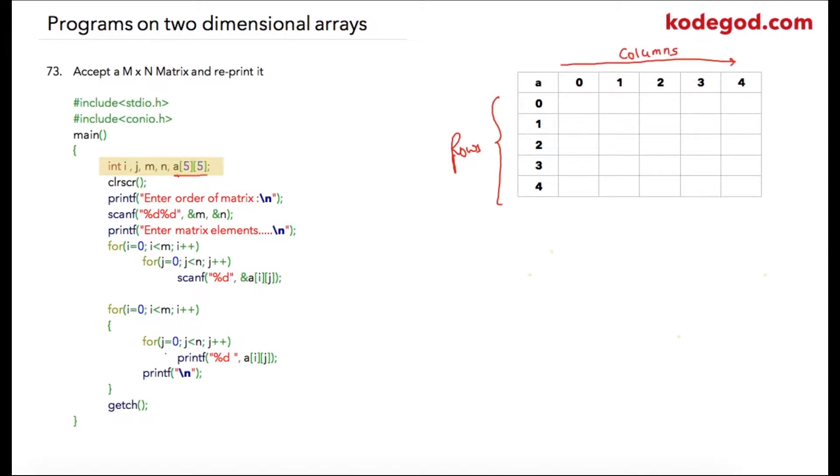In the program, I have declared a matrix of five by five, that is five rows and five columns. So technically we have five multiplied by five, twenty-five integer values that this array can store.